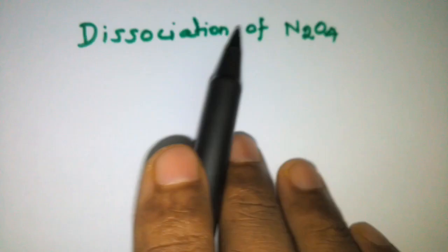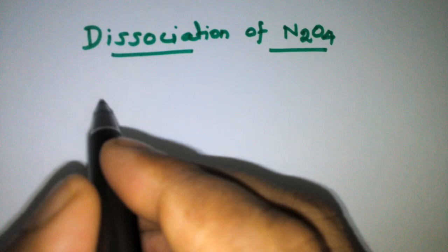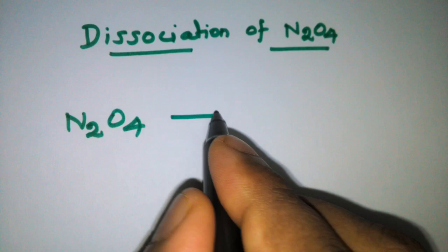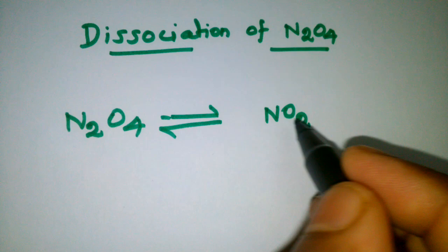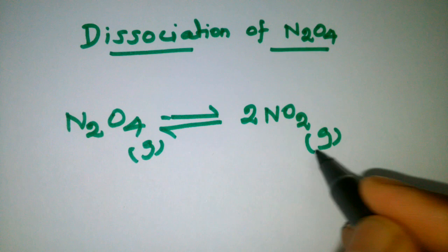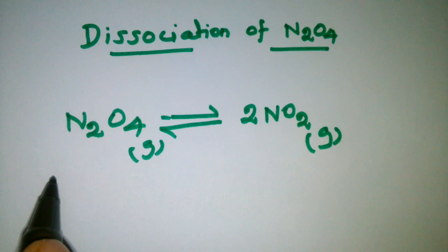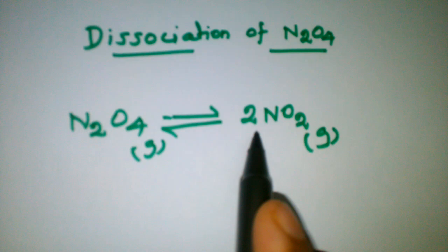Dinitrogen tetraoxide dissociates and will give 2 molecules of nitrogen dioxide. Both are in the gas state. So, 1 mole of dinitrogen tetraoxide gives 2 moles of nitrogen dioxide.